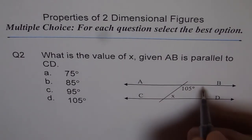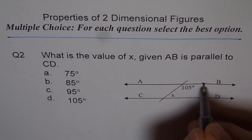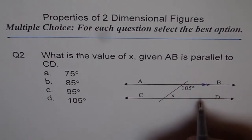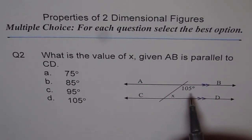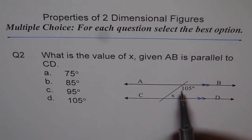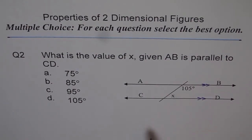So these two lines are parallel, and we need to figure out what is the angle X given one angle of 105 degrees. Make a choice — here is my selection.